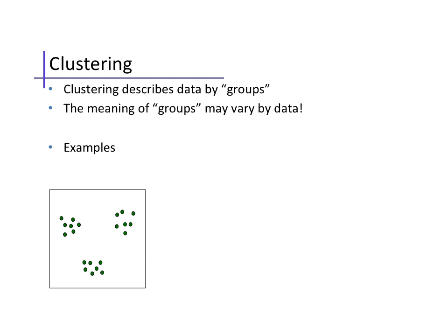For example, when we look at these two-dimensional points, we immediately see an explanation that the data are organized into about three groups, like so, and these groups share similarity in their general location in this feature space. So points over here belong to this group, points over here belong to this group, and so on.